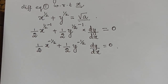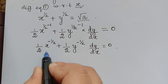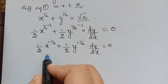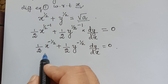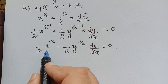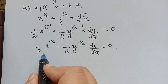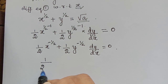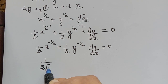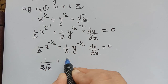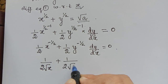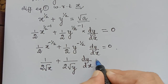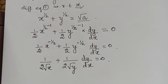Let us rewrite this further. Since x^(−1/2) in the denominator becomes x^(1/2), which is √x, and similarly y^(−1/2) becomes 1/√y, the equation becomes: 1/(2√x) + (1/(2√y)) · dy/dx = 0.